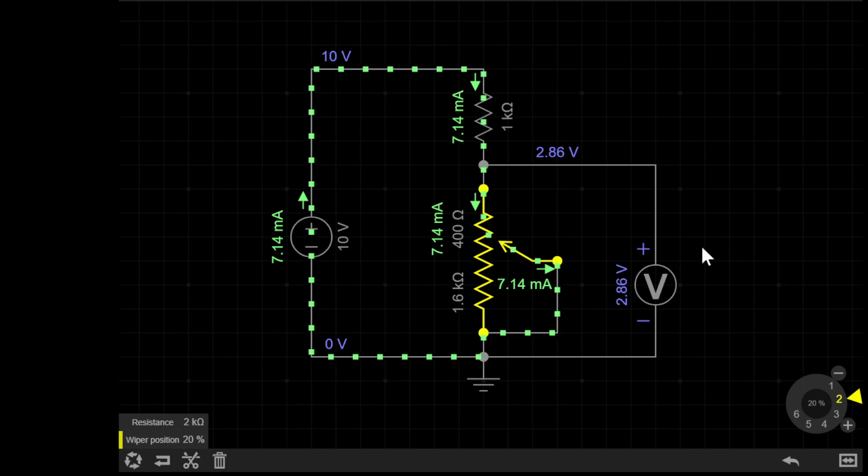One other kind of common variable resistor that I will mention is a rheostat, which has only two pins and is designed specifically to control in series current. They often have much higher current ratings than potentiometers.